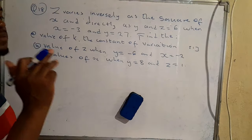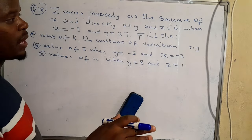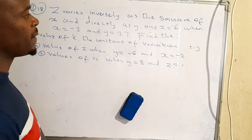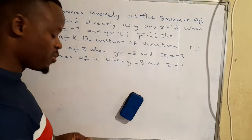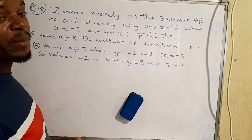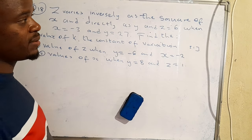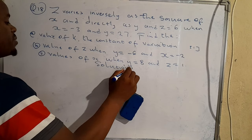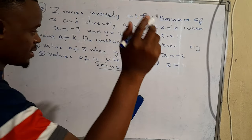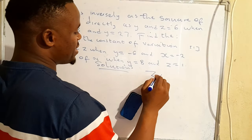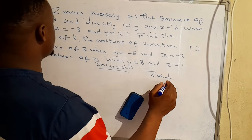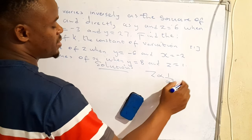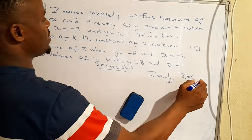We have a question on variation, which is one of the topics covered in Grade 11. The secret to solving these problems is being able to formulate equations from the worded statements. So: z varies inversely as the square of x, and directly as y.